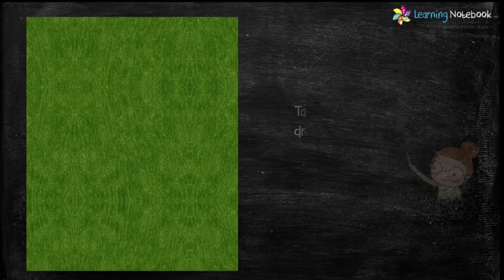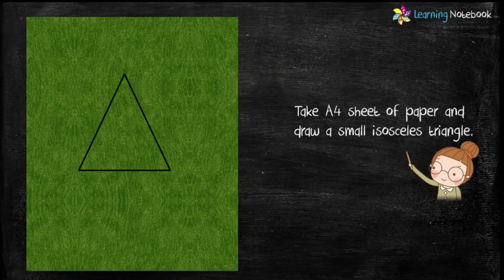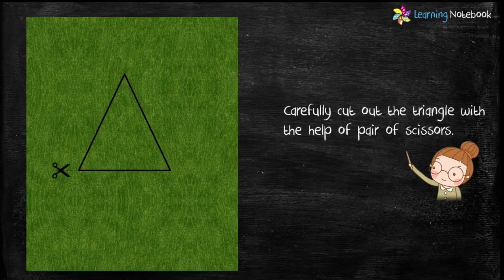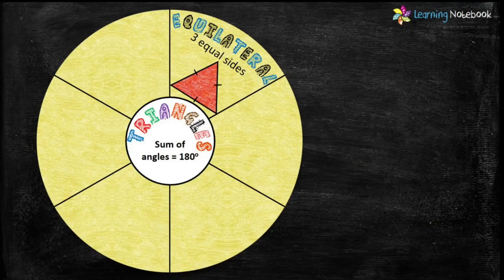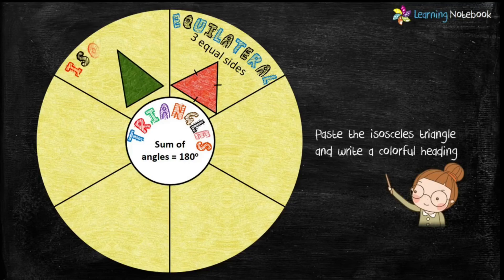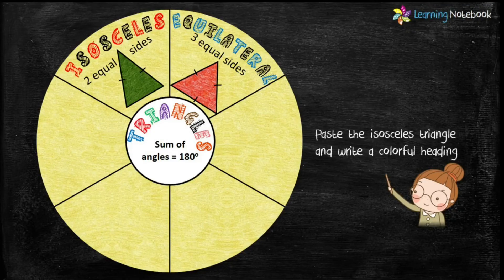Next, take another A4 sheet of paper and draw a small isosceles triangle. Again, students, you can choose to do the construction of an isosceles triangle using a compass and a ruler. Then carefully cut out this triangle using a pair of scissors. Paste this isosceles triangle and write a colorful heading along with its property — that it has two equal sides.